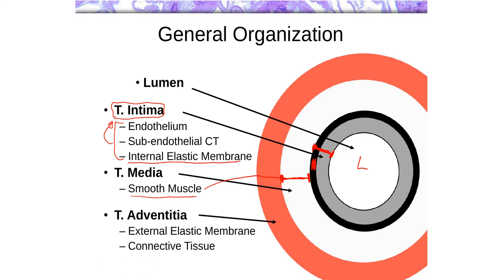The outermost layer is called the tunica adventitia. You will be seeing tunica adventitia quite frequently — it basically means the outer layer of connective tissue. It is a relatively dense connective tissue layer; not as tough as you would find in the dermis, but definitely more dense than loose connective tissue. Sometimes you might notice a layer of elastic fibers between the tunica media and the tunica adventitia, called the external elastic membrane, which tends to be visible in larger blood vessels but not in smaller ones.